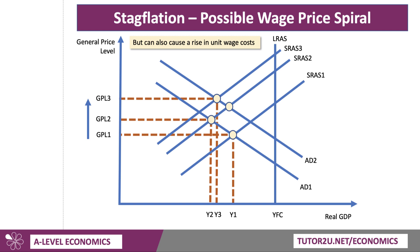So we end up somewhere close to Y3 — slow growth and an acceleration in inflation. That will be the diagram I would draw for stagflation. And the danger is, of course, that inflation expectations go up. People start to expect higher prices, and as a result, high inflation can become embedded in the economy. So there's your wage-price spiral stagflation diagram, which will be a terrific one to use in the exam.